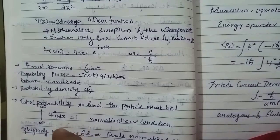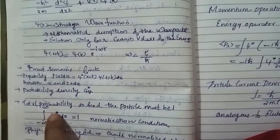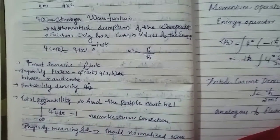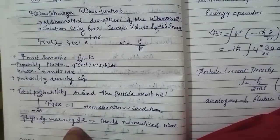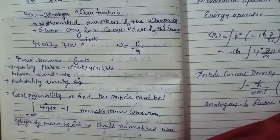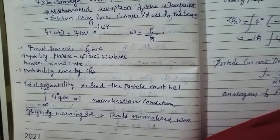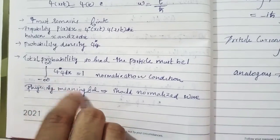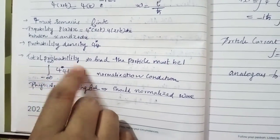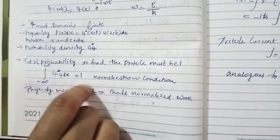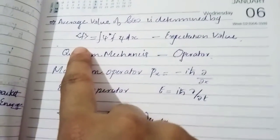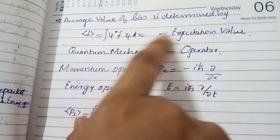The total probability to find the particle must be 1 — that is, the integral from minus infinity to plus infinity of psi-star times psi dx equals 1. This normalization condition must be satisfied. Physically, a normalized wave function is physically meaningful. The average value of f(x) is determined by the expectation value: the integral of psi-star times f times psi dx.